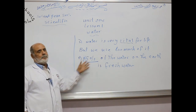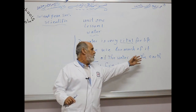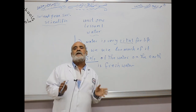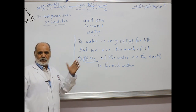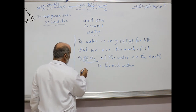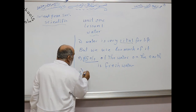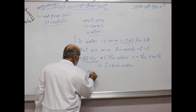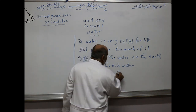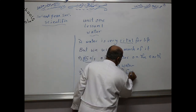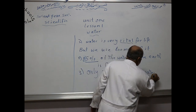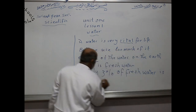25% of water on the earth is fresh water, which means that 75% of water is salt water. Only 3% of fresh water is drinkable.